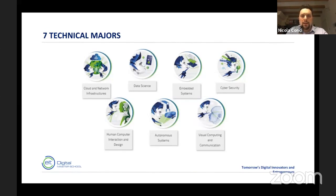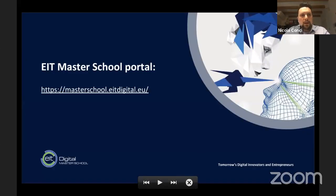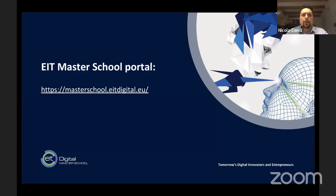In our department at the University of Trento, we are offering all seven programs, so students can choose the one that best fits their interests. For additional information about the master school, I highly recommend visiting the EIT Digital master school website, where you can find all necessary details — the entry and exit points, meaning the universities where you spend your first and second year.